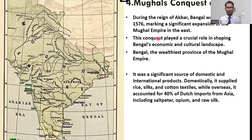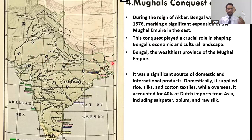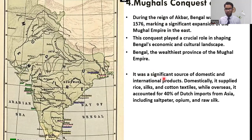During the reign of Akbar, Bengal was annexed in 1576, marking a significant expansion to the east. While the western parts of India were already under Mughal control, the eastern regions — Bengal, Assam, and Bihar — were annexed in 1576. Before that, the Bengal Sultanate ruled the area. Bengal was a significant source of domestic and international products, supplying rice, silk, cotton textiles, and 40 percent of Asia's total imports.